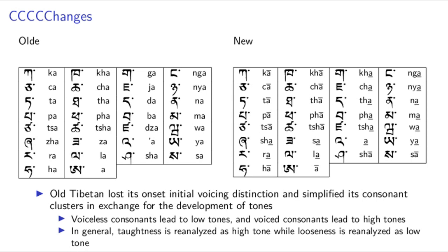One more thing before we continue. Remember that in Old Tibetan phonology, voicing and aspiration are not distinguished after the first syllable of a word. Logically, it would make sense that tones would not develop in the modern language for second syllable stops, and this is completely true. In fact, tone only applies to the first syllable of a word, as well as aspiration and voicing distinctions. So it's still true that the stops in the same row of the chart will generally be pronounced the same when not word-initial.